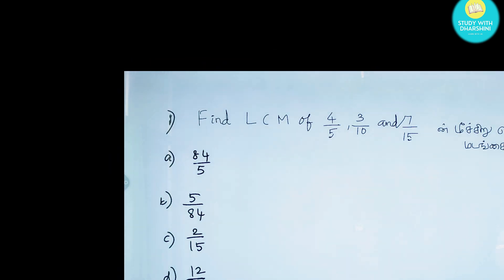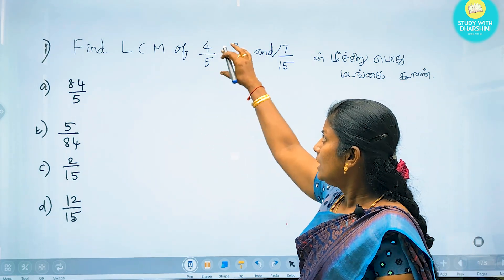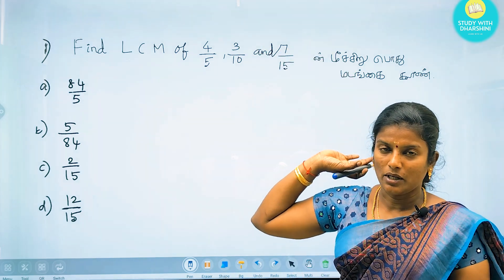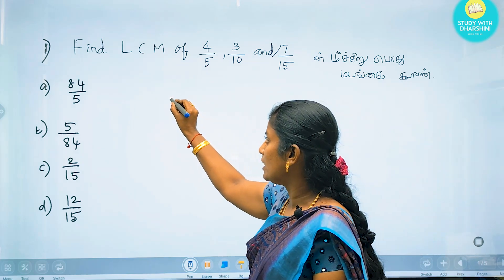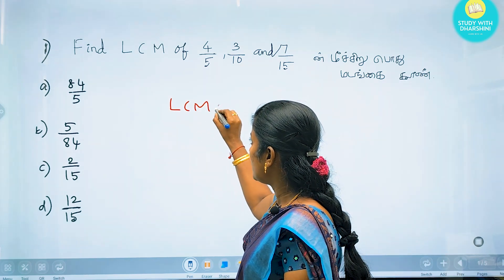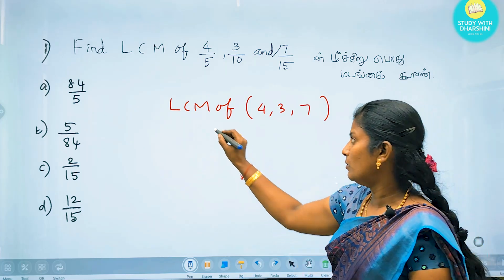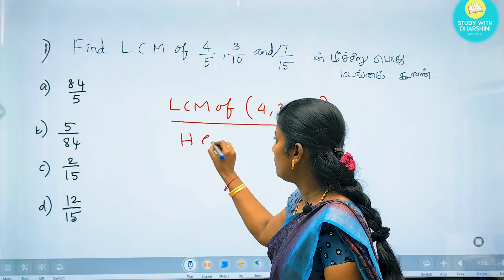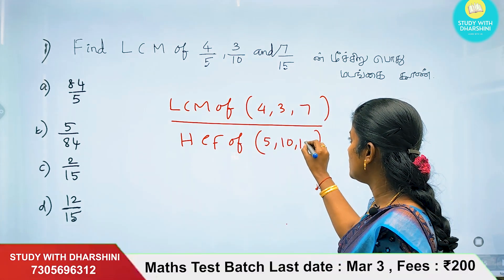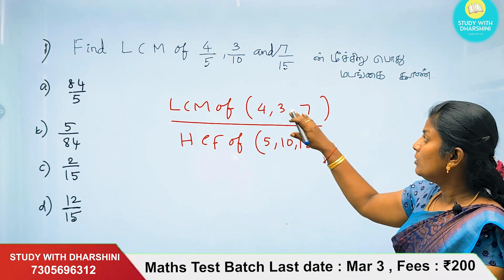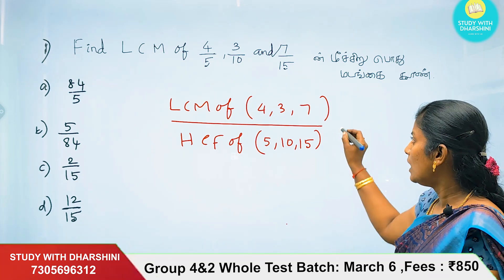We have a basic video about HCF/LCM. When we look at fractions, we need to find the LCM of the numerators and the HCF of the denominators. The denominators are 5, 10, and 15 — we take their HCF. The numerators are 4, 3, and 7 — we take their LCM. We will solve it to get the answer.